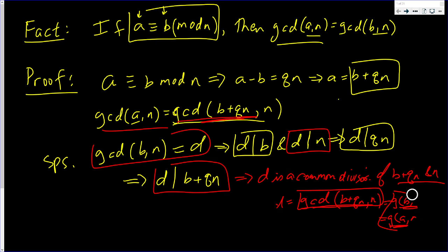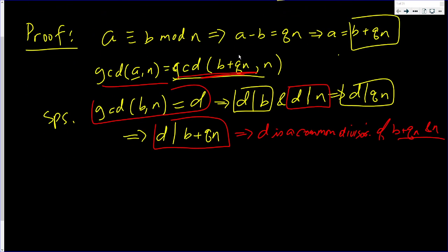So, what do you do if you have a common divisor and you want to show that it's the greatest common divisor? You choose another common divisor. Let C be another common divisor of B plus QN and N. Now, there's one last thing I want to say.